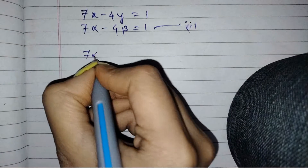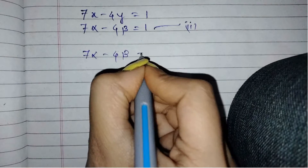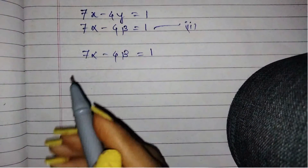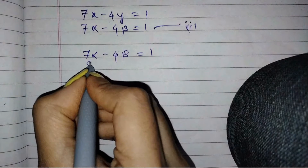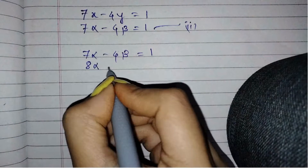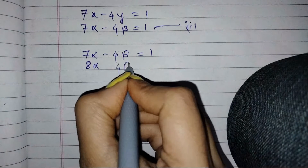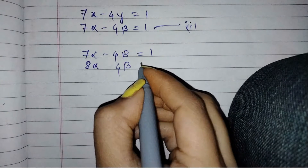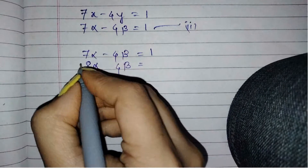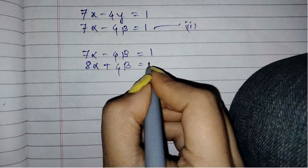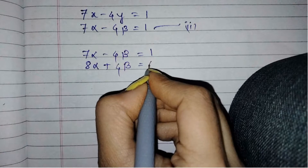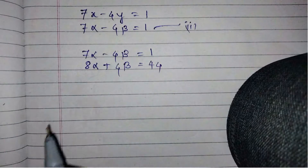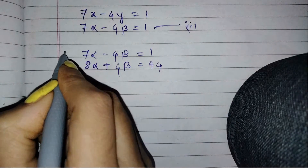7α - 4β = 1. Multiply the first equation by 4, that gives 8α + 4β = 44.